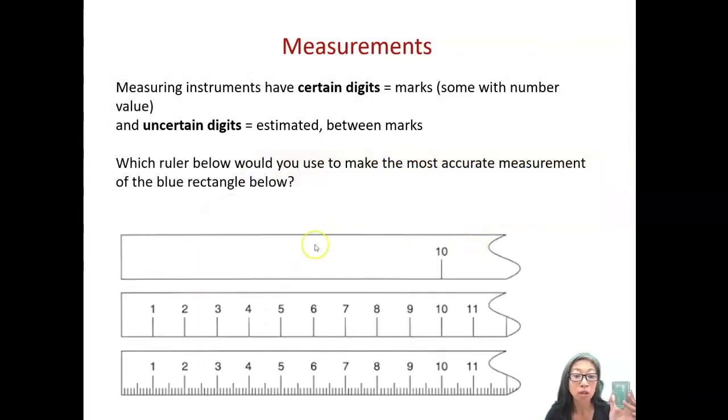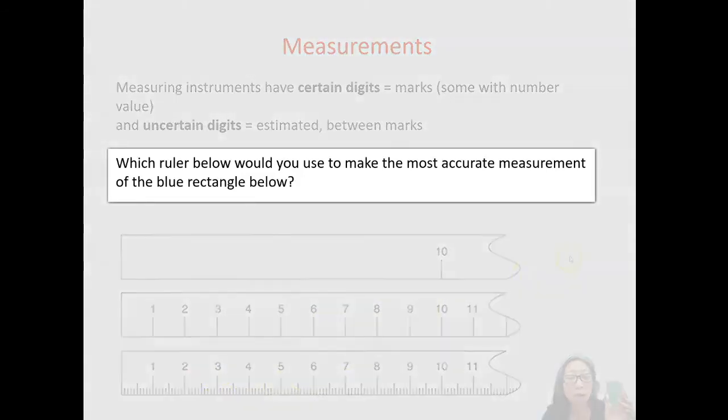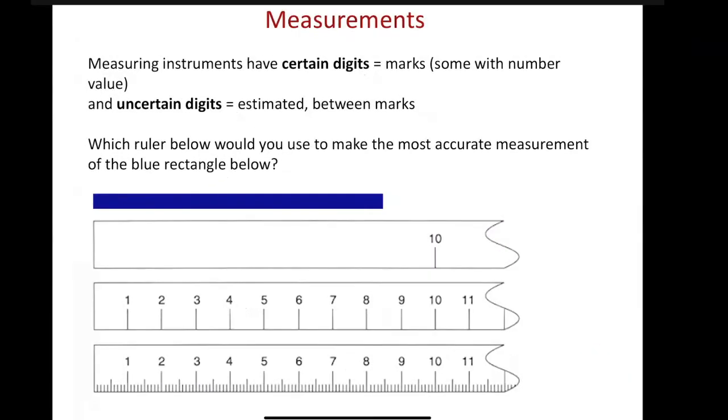On these examples, we have three rulers. Now these rulers have marks, some have marks with numbers and some have marks without numbers. So which ruler would be used to make the most accurate measurement of this blue rectangle? These three rulers are not equal. What they do all have in common is, let's assume that they are metric rulers all measuring from approximately 0 to 11 centimeters. This top ruler has the least amount of marks, there's really only that mark of the 10, so that makes that the least precise. Why is it the least precise? It's because you have to estimate everything in between 0 and 10. This ruler down here has the most marks, that's going to be the most precise. This will give you the most digits, the certain digits and also the uncertain digit will be more precise.